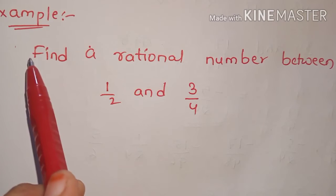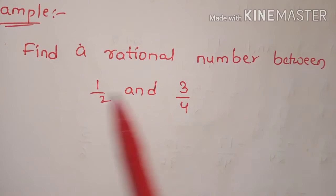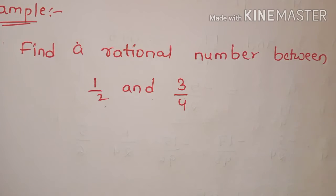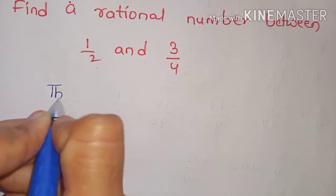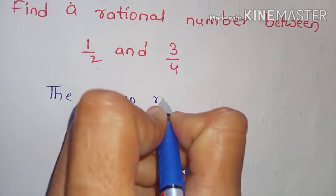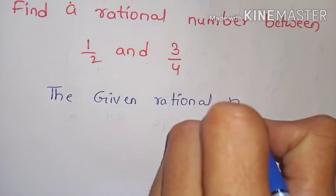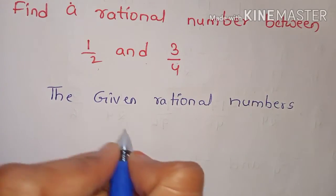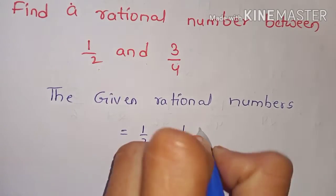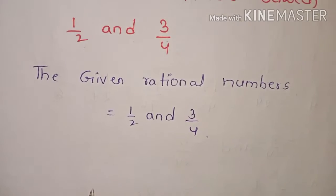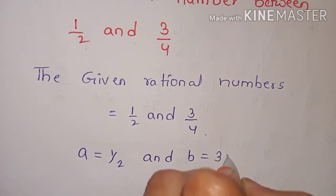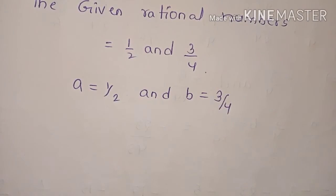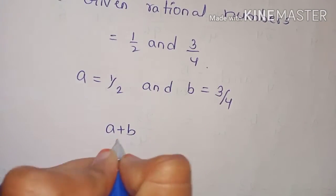For example, one problem is: find a rational number between 1 by 2 and 3 by 4. In this problem, we will find the term in the middle. The given rational numbers are 1 by 2 and 3 by 4. We write a equals to 1 by 2 and b equals to 3 by 4.